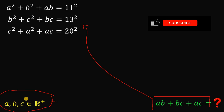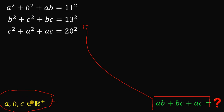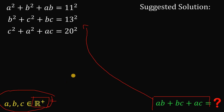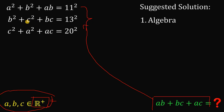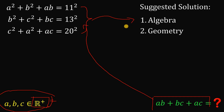Since A, B, and C are all positive real numbers, I have two suggested approaches. The first suggested solution is using algebra, because this problem involves a lot of variables and numbers — it is algebraic in nature. My second suggested solution, and this is my favorite, is to convert this to geometry.